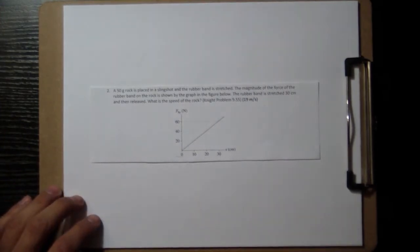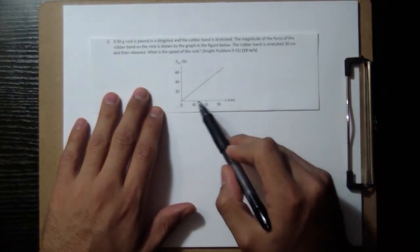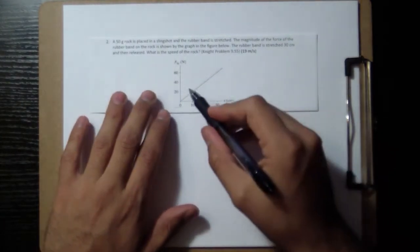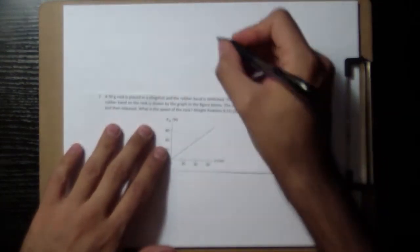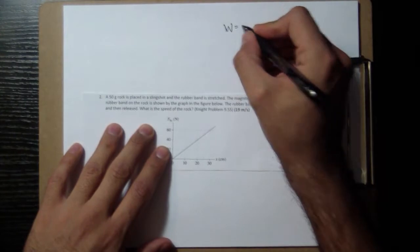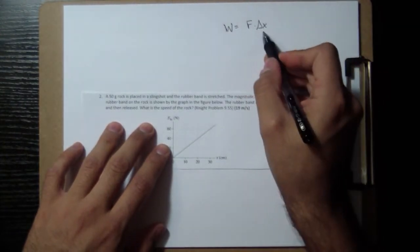Now we're given a graph. Notice that the graph is a force versus position graph, which means that we're going to be able to take this graph and get the work done. Just remember that the work that is done on something is a force times change in distance.